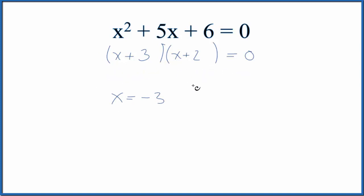If we had a minus 2 for x, if x were to equal minus 2, we'd have minus 2 plus 3 times minus 2 plus 2. Minus 2 and 2, that's 0. So 0 times anything equals 0. So this is also a solution for the equation here.